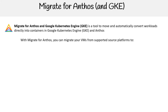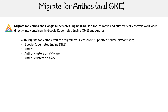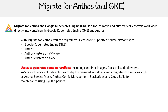With Migrate for Anthos, you can migrate your VMs from your supported source platforms to Google Kubernetes Engine, Anthos clusters on VMware, and Anthos clusters on AWS — so you can bring them in from a lot of different places.